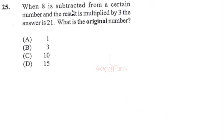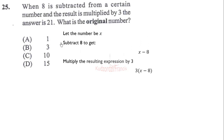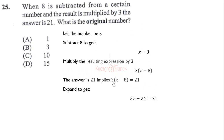Question 25: when 8 is subtracted from a certain number and the result is multiplied by 3, the answer is 21. What is the original number? Let the original number be x. When we subtract 8 we get x minus 8, then multiplying by 3 gives 3(x minus 8) equals 21. Expanding: 3x minus 24 equals 21. Adding 24 to both sides gives 3x equals 45, so x equals 15.